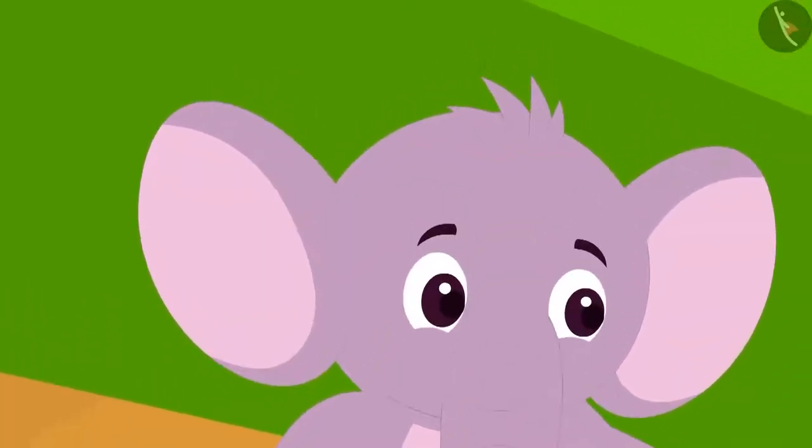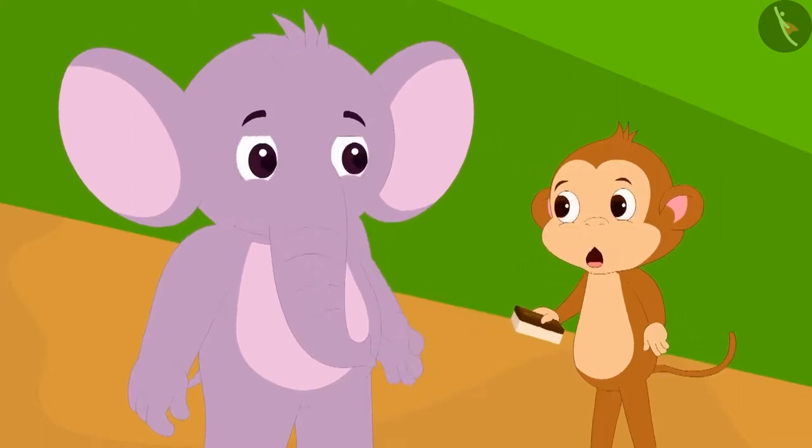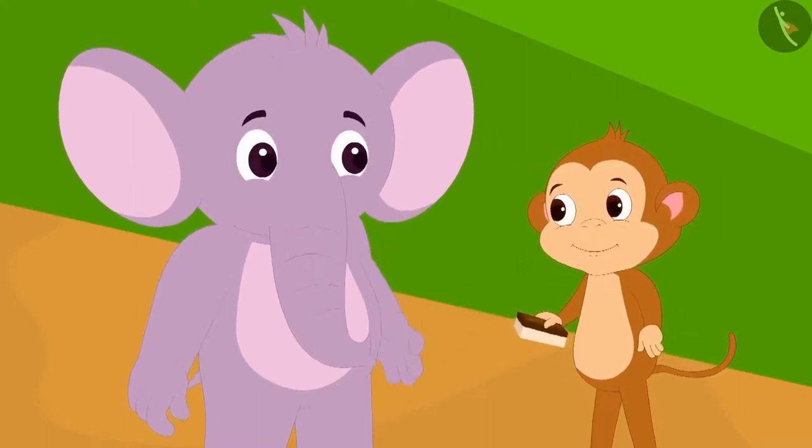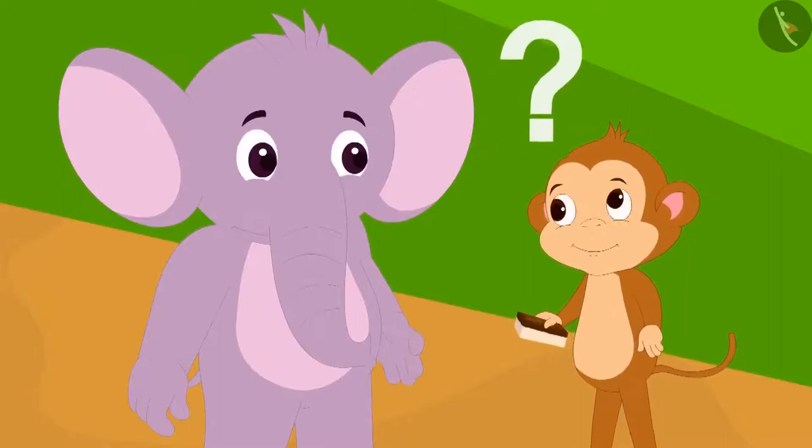Appu first gave Babban a piece of a barfi. Babban immediately said, 12 corners and 8 edges. Is Babban's answer correct?